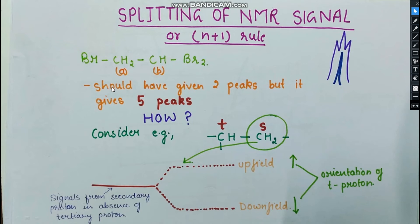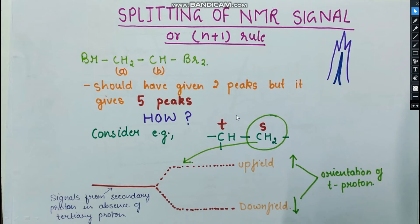In the absence of the tertiary proton, we would get a single peak for the secondary proton. But because the tertiary proton produces its own magnetic field, if it aligns with the applied magnetic field it increases the effective field felt by the secondary proton and they absorb downfield. If its magnetic field opposes the applied field, the effective field for the secondary proton decreases and they absorb upfield. These two probabilities cause the peak to split into two — a doublet.